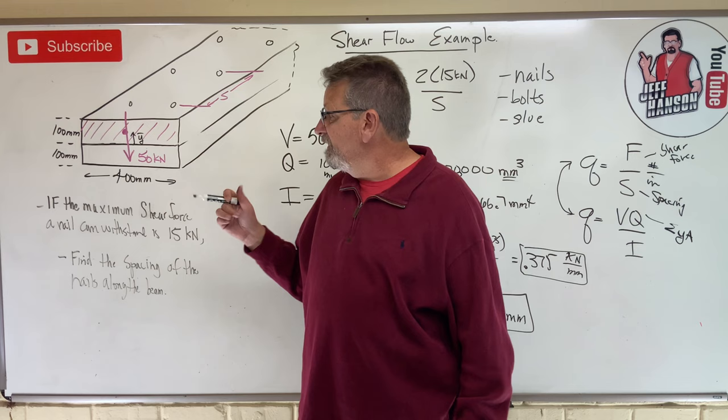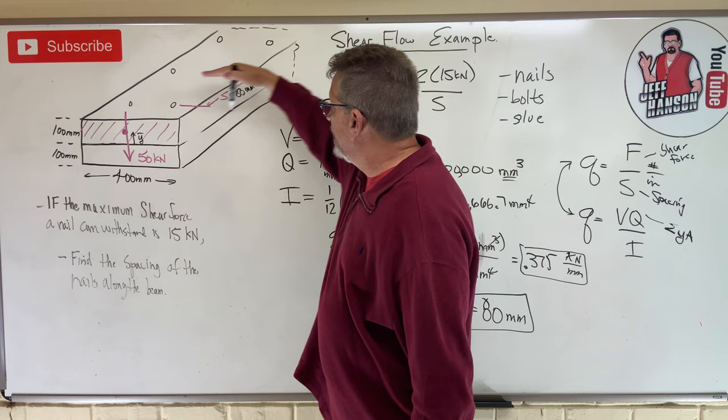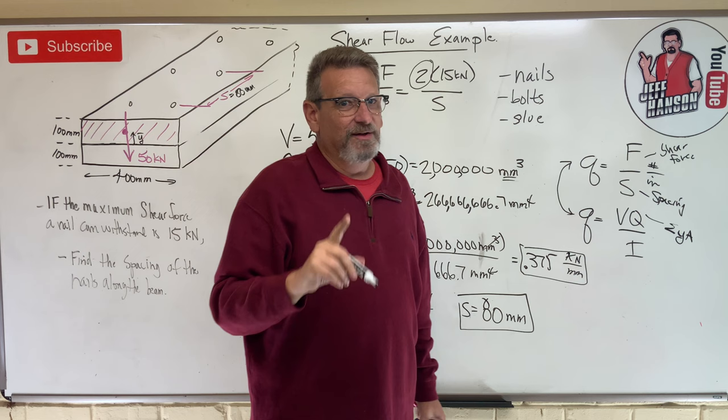So what does that tell me? For that load, I need every 80 millimeters. Every 80 millimeters, I need to put two nails, two nails, two nails. Don't forget about that two right there. That's the biggest thing that people leave off, is they forget how many fasteners there are per row. That's important that you get that.